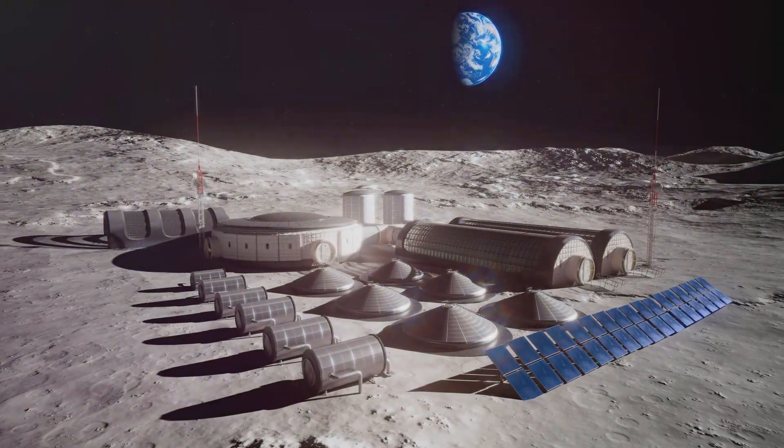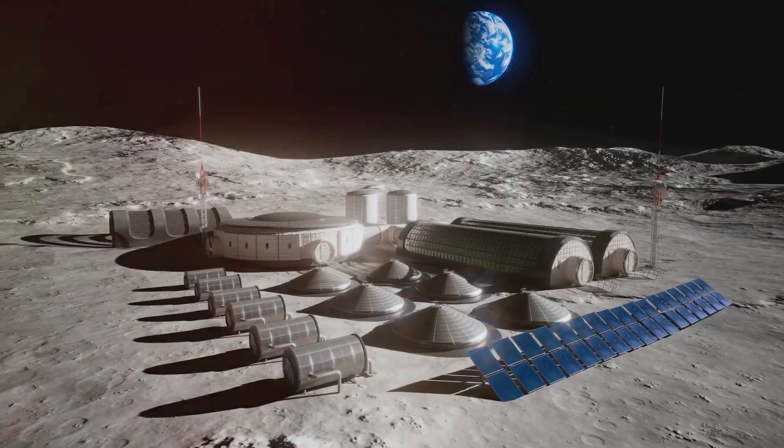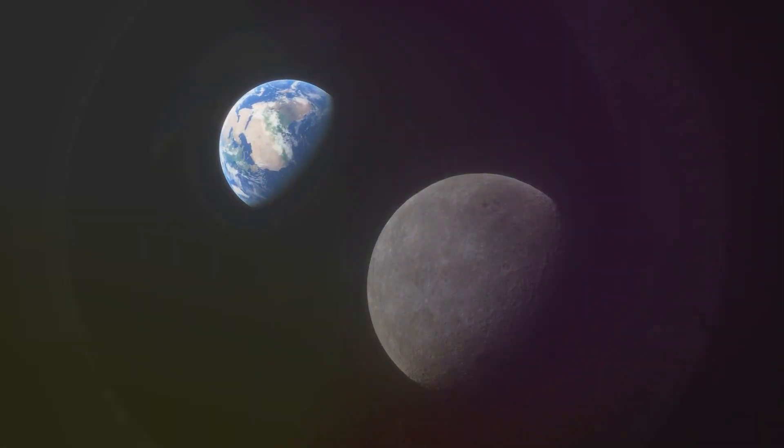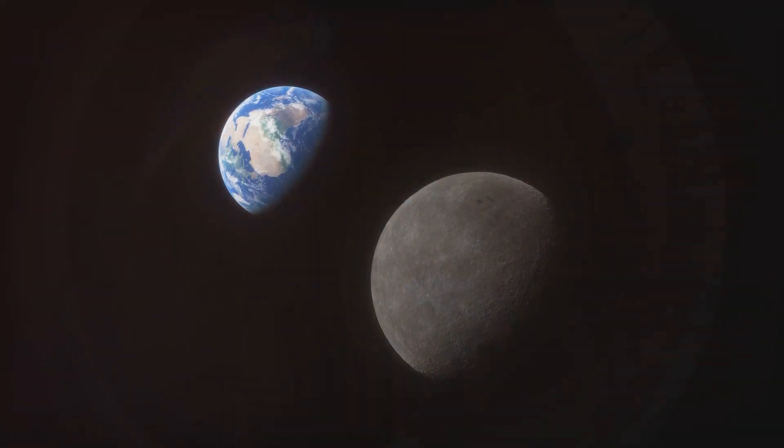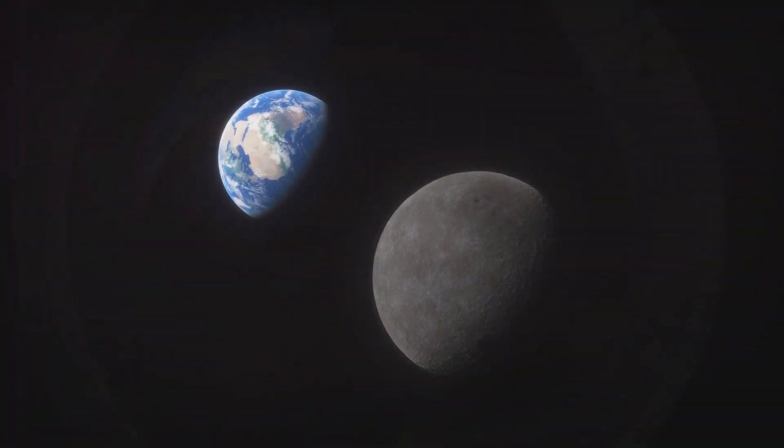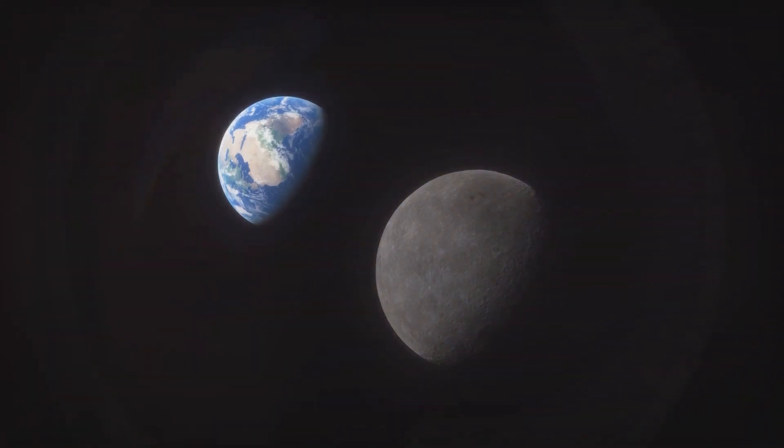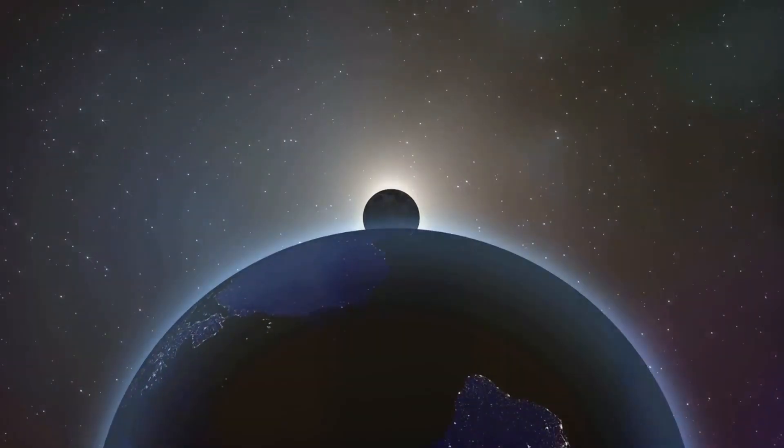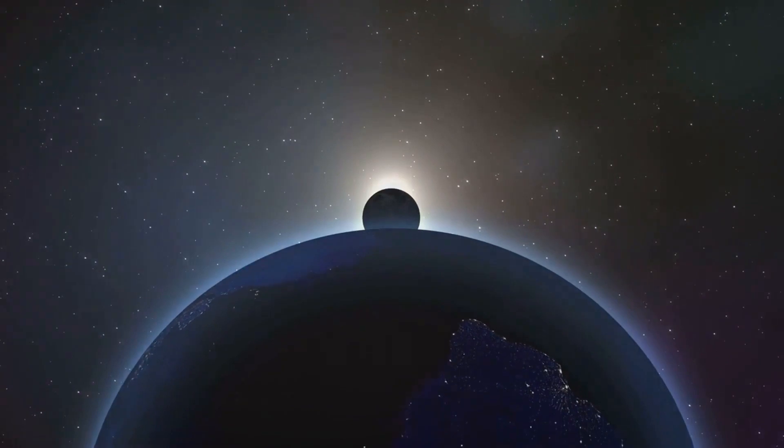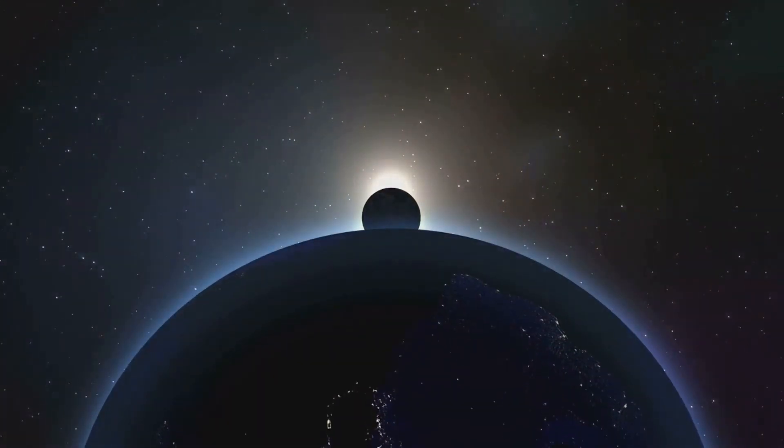This relatively small window of opportunity also happens to coincide with the existence of intelligent life. Put another way, the most habitable place in the solar system yields the best view of solar eclipses just when observers can best appreciate them. The privileged planet thesis extends beyond perfect solar eclipses.